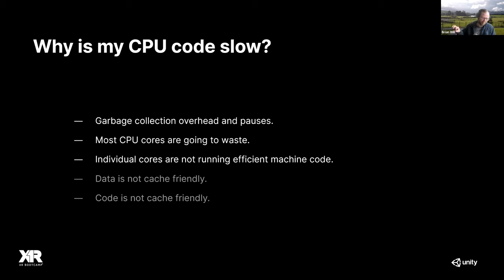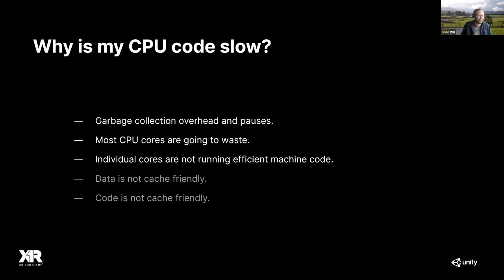Why is your CPU code slow? A major source of CPU inefficiency is garbage collection, which will randomly pause your game. At random times it wants to run and scan through memory looking for garbage, causing your code to pause. This leads to jitters or, in worse cases, outright noticeable pauses to users — generally not acceptable in games, particularly action games. There are ways to mitigate the problem, but you really want to get rid of it entirely.